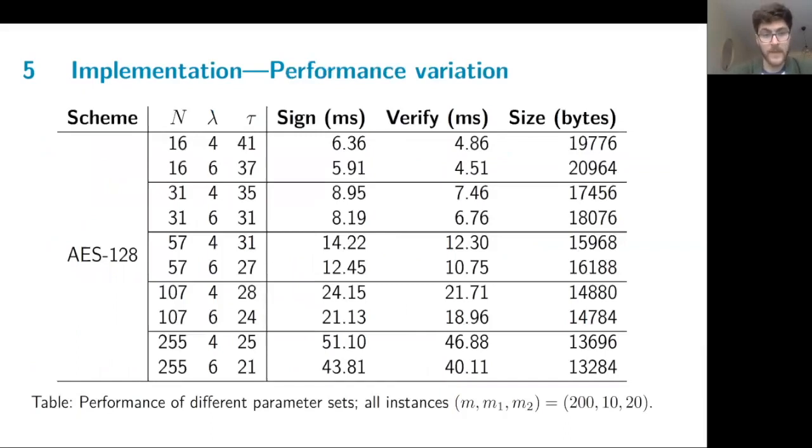So this table demonstrates the variation in performance as we vary the parameters. These are all for AES-128. Then below you can see the factorization of the number of S-boxes that we use. And we see that by increasing N, the number of parties, we of course increase the computation time, because the prover has to simulate more parties, but we also reduce the signature size. And then each line further divides the results between the different lambda values, which is how high we lift the values during the check. And this affects soundness because we see that the tau requirement differs as well, the number of parallel repetitions.